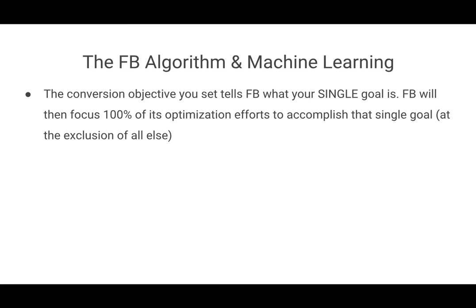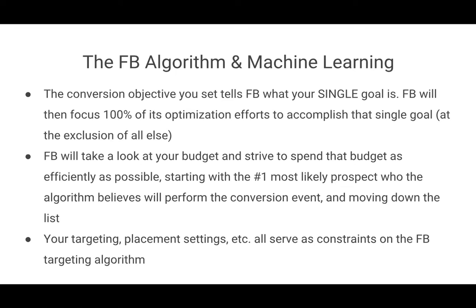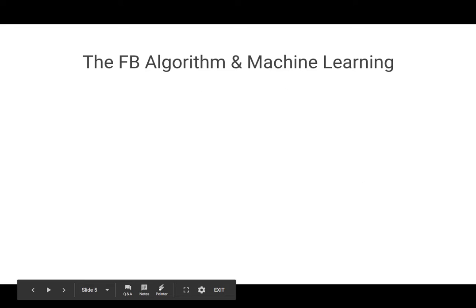Facebook will optimize 100% towards whichever objective you choose. Facebook will take a look at your budget and attempt to spend it as efficiently as possible, starting with who Facebook believes to be the most likely prospect to perform that conversion event and moving down the list. Your targeting and placement settings all serve as constraints on the Facebook targeting algorithm, and Facebook will work within those constraints to spend your budget as efficiently as possible.